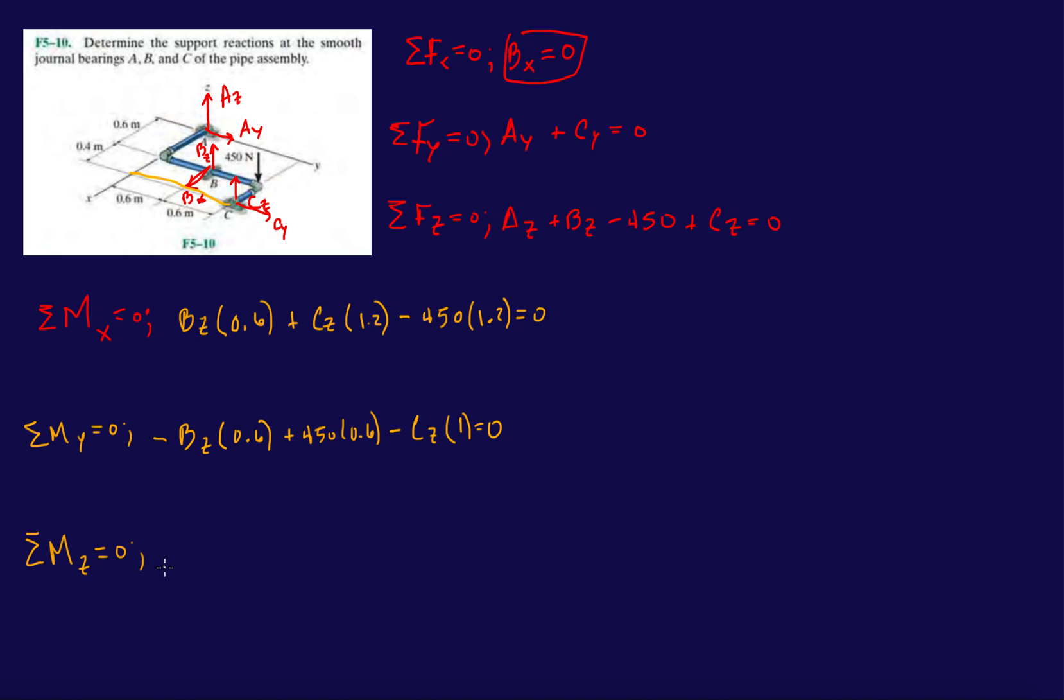So let's see, forces that are not in the Z direction and forces that are not touching the Z. So let's start with B_x times 0.6. B_x times 1 equals 0. Boom.